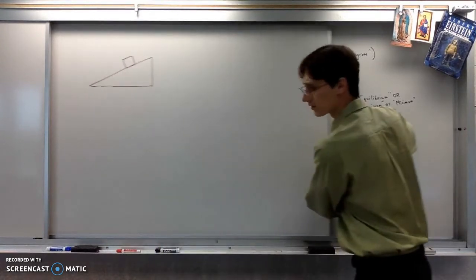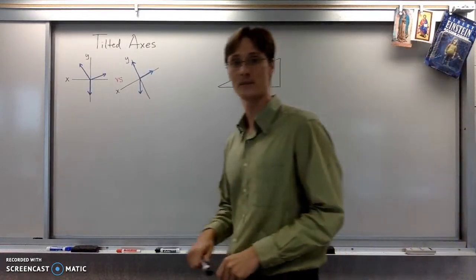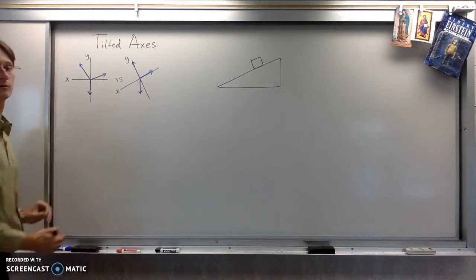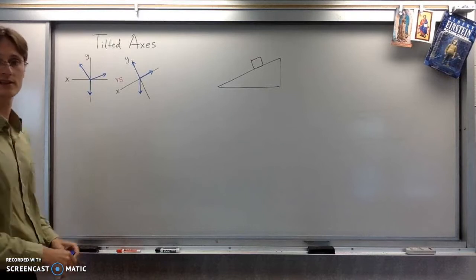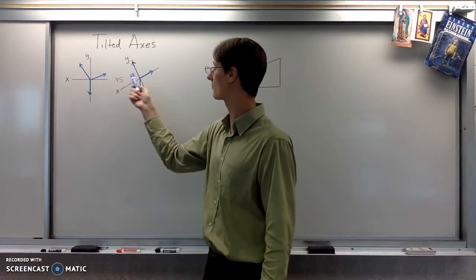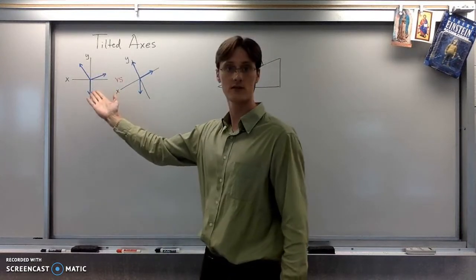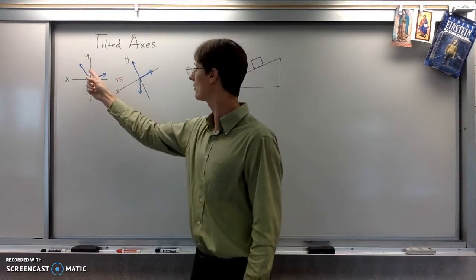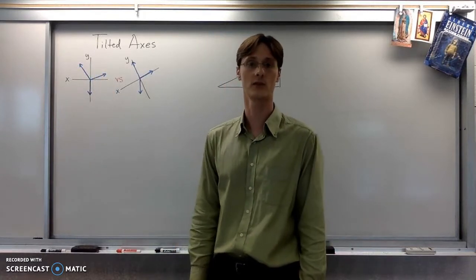Now, another way that you can understand why this makes the problem easier is by considering these two scenarios, those two sets of vectors. Excluding things like bad art right here. These are supposed to be the same three vectors. The difference is, for this one, I used standard axes. So two of the vectors are off-axis. So we'd have to find components for two out of three vectors.